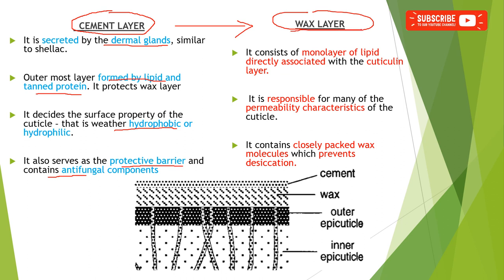The wax layer mainly consists of a single monolayer of lipid directly associated with the cuticlin layer. This wax layer is mainly responsible for the permeability characteristics of the cuticle, while the cement layer is responsible for the surface properties. The wax layer consists of closely packed wax molecules that prevent desiccation of water from the body.